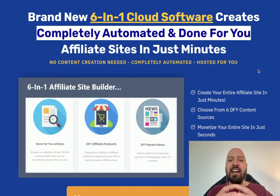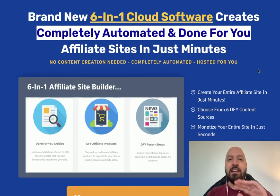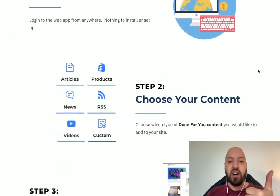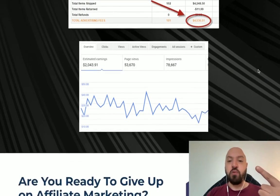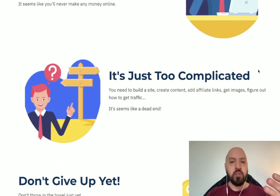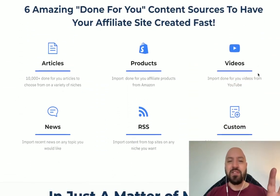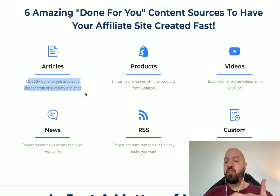Now that might sound like a massive promise, but you're about to see a full demo of creating these beautiful done-for-you websites. In just over four minutes you can build a full site with thousands of articles filled with Amazon affiliate products, or affiliate products from any affiliate network you want, with beautiful pictures. You don't need to worry about web hosting, web design, or any IT, tech, or business skills. Using these six content sources, you can pull from 10,000 done-for-you articles in a variety of topics or niches.